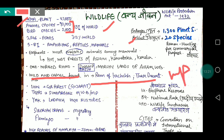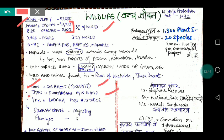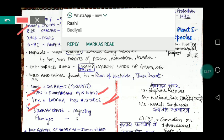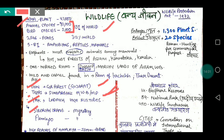Lions are found only in the Gir Forest — this is important, do not get confused. Tigers are found in Sundarbans and Madhya Pradesh. Siberian crane and flamingo are migratory birds. You may be asked which birds are migratory — the answer includes Siberian Crane and Flamingo.